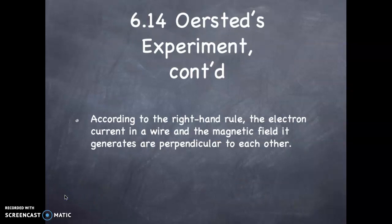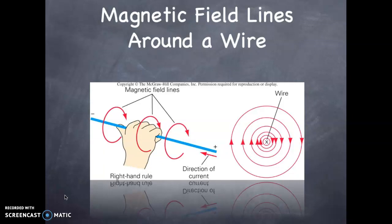According to the right hand rule, which is an important rule, the electron current in a wire and the magnetic field it generated are perpendicular to each other. Here is an illustration. You grab the wire with the right hand with the thumb pointing in the direction of the current. With the hand circulated around the wire, the fingers give the direction that the magnetic field would have. This is the right hand rule that illustrates the direction of the magnetic field lines when you know the direction of the current.